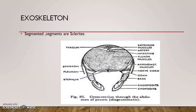Each tergum has a downward extension called the pleuron, found on either side of the body. The part between the pleuron and the abdominal appendage on each side is called the epimeron.